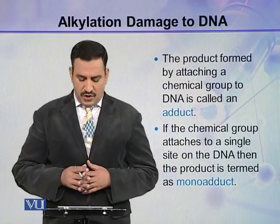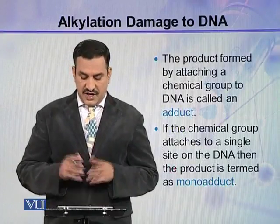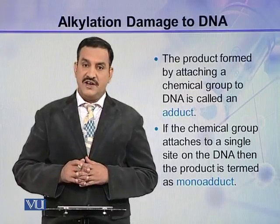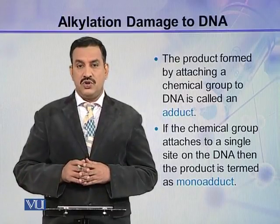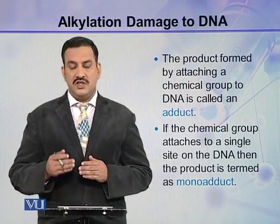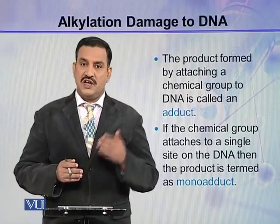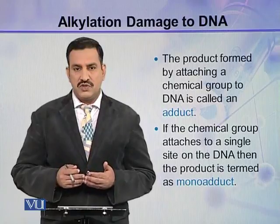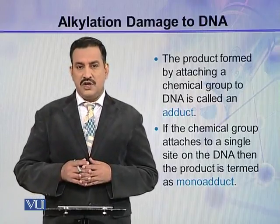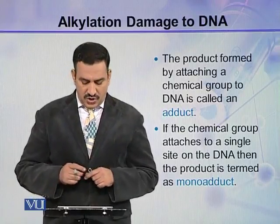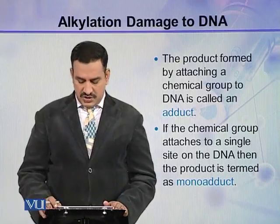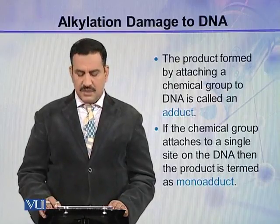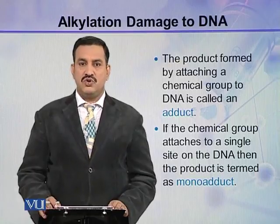The product formed by attaching a chemical group to DNA is called an adduct. Sometimes these groups may be attached at different sites in the DNA, but in most cases they are involved at only one site. If the chemical group attaches to a single site on the DNA, then the product is termed a mono-adduct.